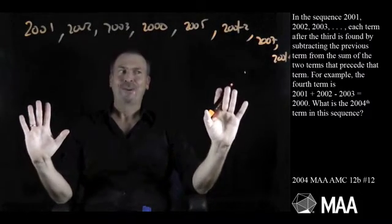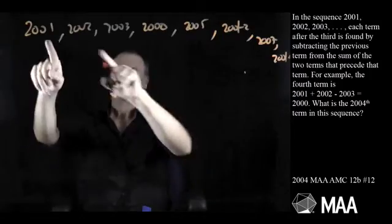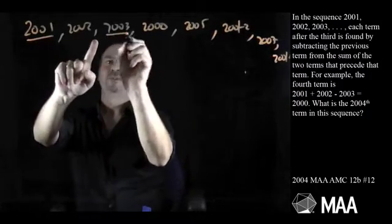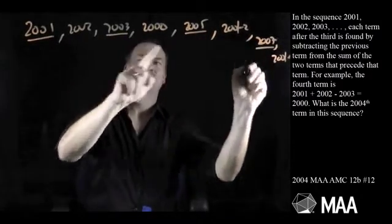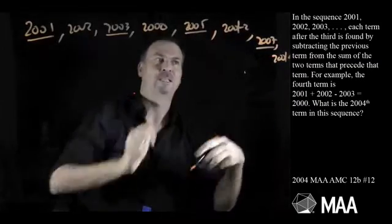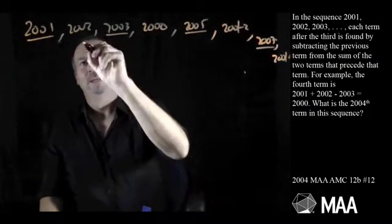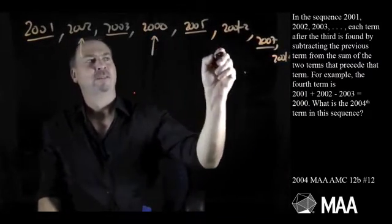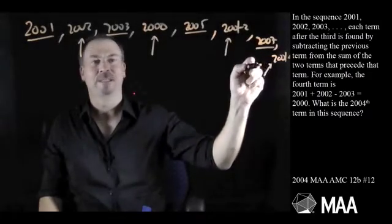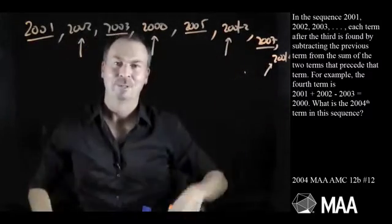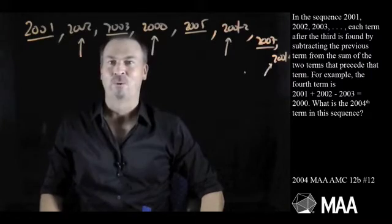Okay, I'm staring at this. I'm seeing something. Look at this. 2001, 2003, 2005, 2007. Those odd terms seem to be going up by 2 each time. 2002, 2000, 2000 negative 2, 2000 negative 4, they seem to be going down 2, as I keep going along with all those even terms.